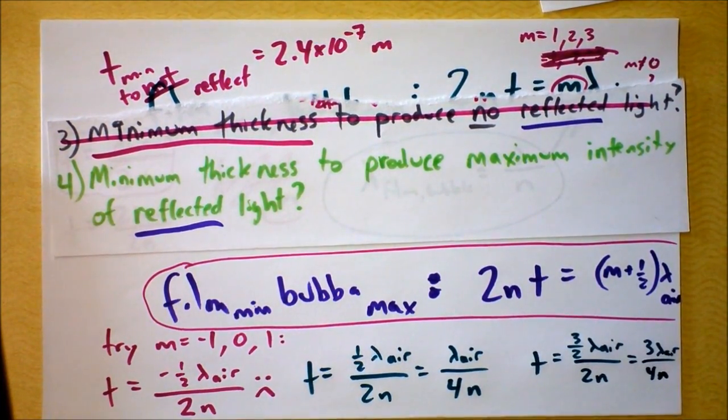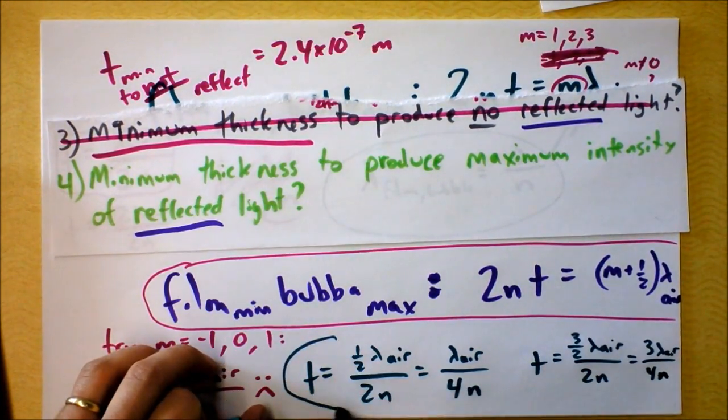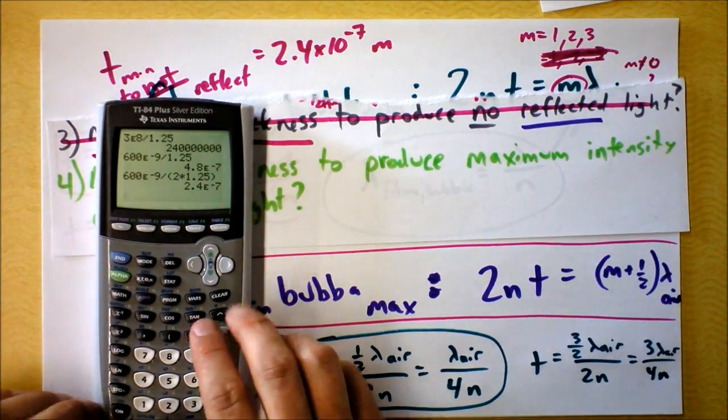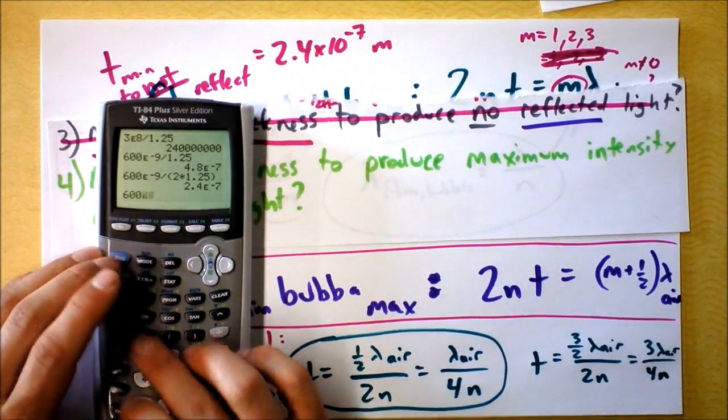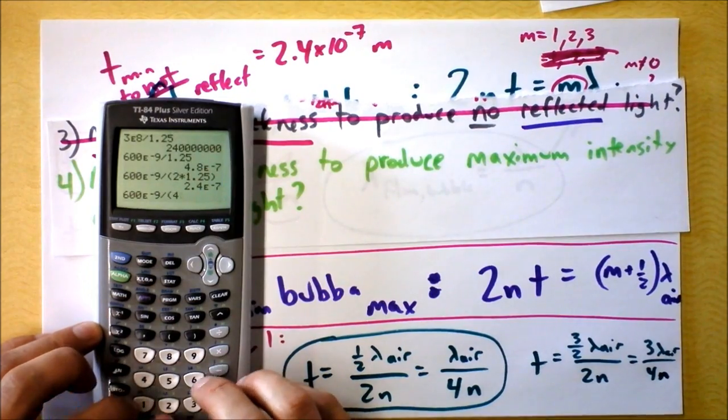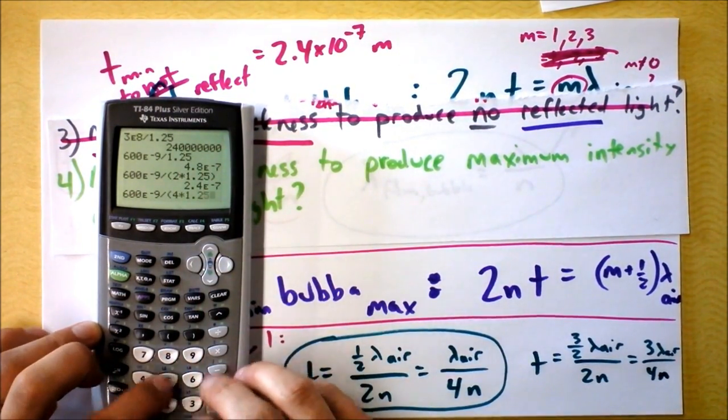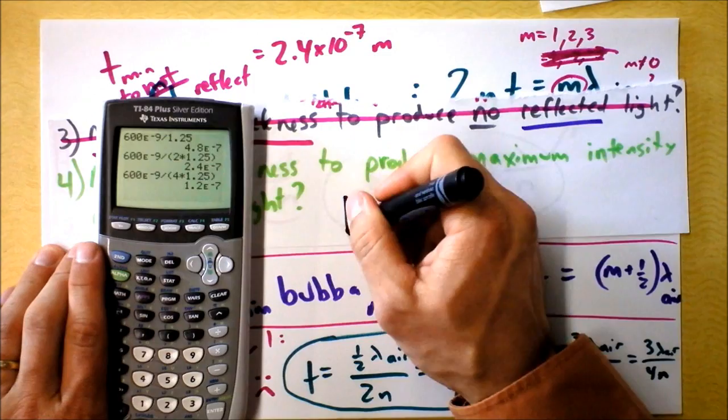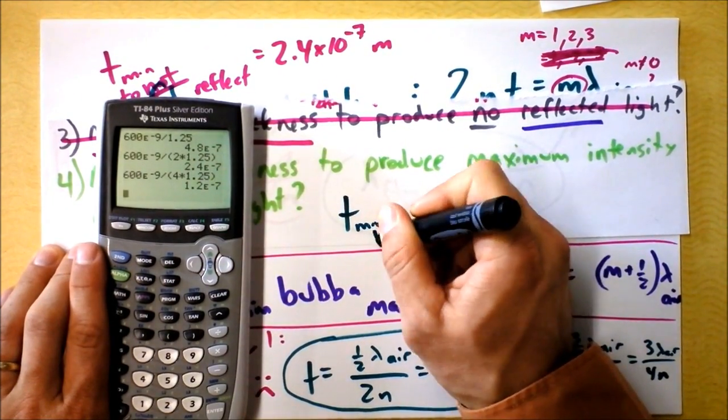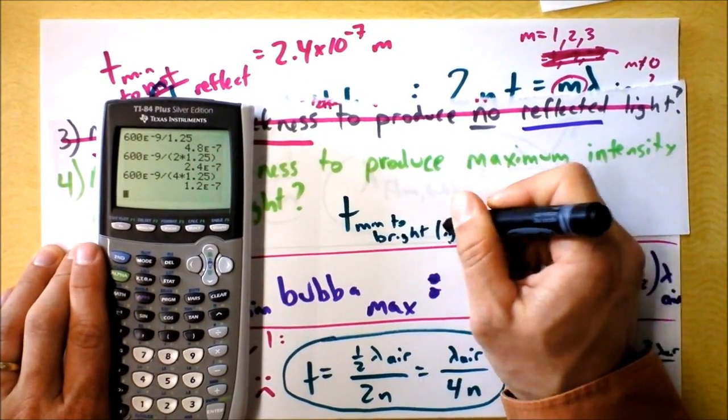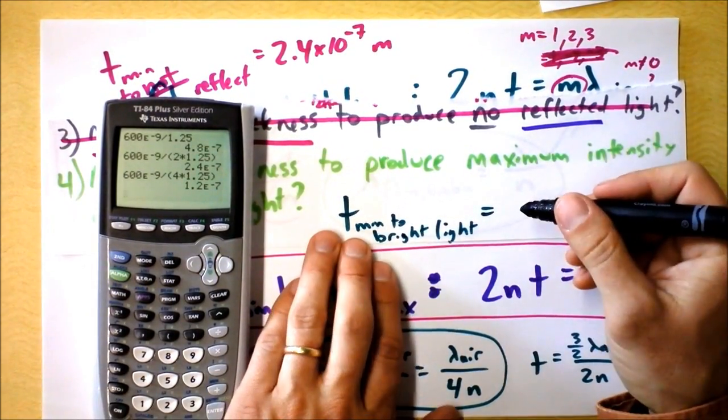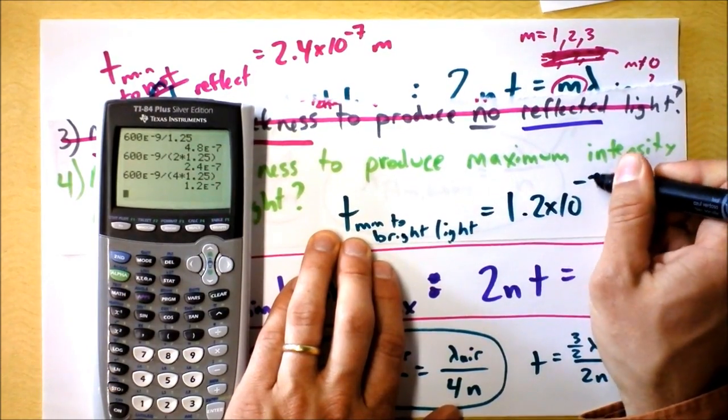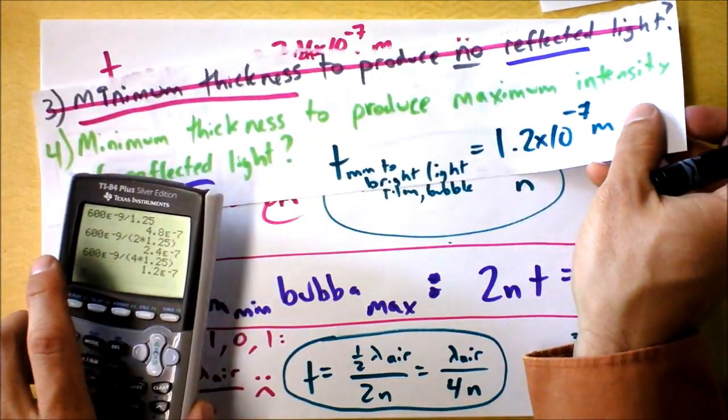Let's do that calculation right there. My wavelength in air is 600 nanometers, and then I'm supposed to divide it by 4 times 1.25. And my answer is a quarter wave. I find that that minimum thickness to bright light is one-quarter of the wavelength inside the bubble, which is 1.2×10^-7 meters.